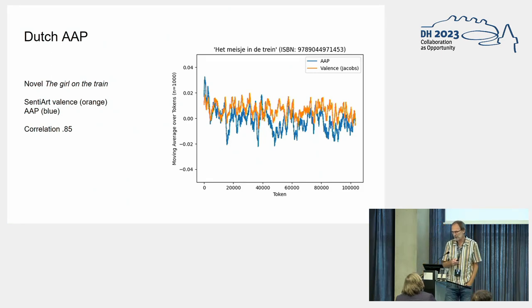Then just the values within a single novel of this AAP and valence. This is The Girl on the Train, which you may know. We see in orange the value as computed according to the procedure by Jacobs and the AAP. What you see is that it is close—the correlation is 0.85—but again there are also clear differences where the two curves clearly run differently. So the AAP clearly also finds a signal that the valence alone wouldn't find.